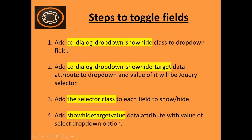There are a few steps to use this client library with the drop-down select field. The first step is to add the cq-dialog-dropdown-showhide class to the drop-down field. After that, the second step is to add the cq-dialog-dropdown-showhide-target data attribute to the drop-down, and the value will be a jQuery selector. The third step is to add the selector class to each field that we need to show or hide, and the last step is to add the showhide-target-value data attribute with the value of the select drop-down option in the field we need to show or hide.